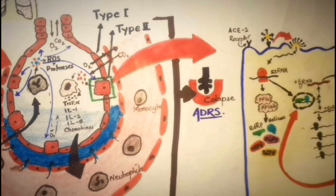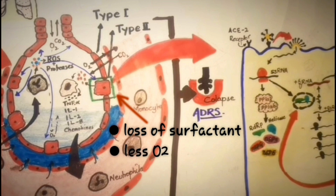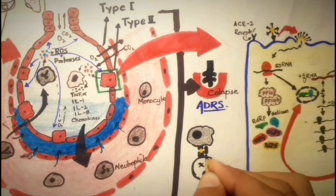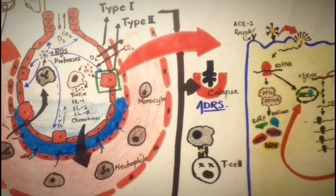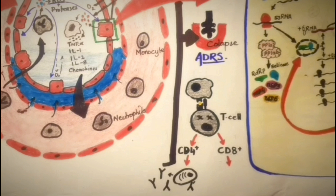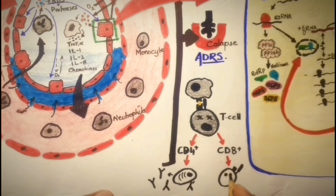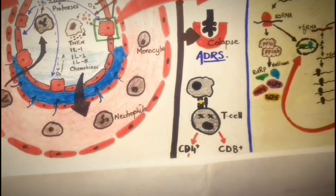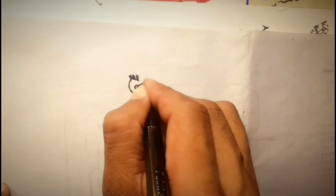When the immune system attacks infected cells, it also kills healthy cells, resulting in three consequences leading to ARDS: first, alveolar collapse due to loss of surfactants from destruction of type 2 alveolar cells; second, less oxygen enters the bloodstream due to leakage of type 1 cells; and third, more fluid enters the alveoli, which may cause fibrosis. Some antigen-presenting cells, after engulfing infected cells, move to the lymph nodes to present viral antigen to T cells. CD4+ T cells activate B cells to promote production of virus-specific antibodies, while cytotoxic CD8+ T cells kill virally infected cells but also contribute to lung injury.